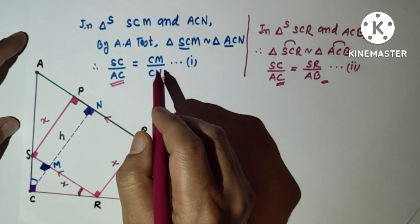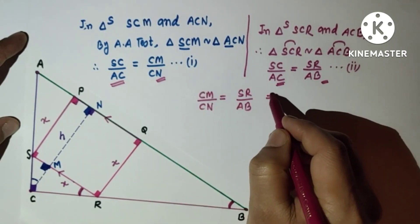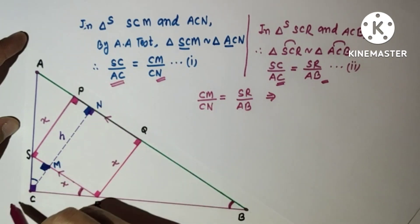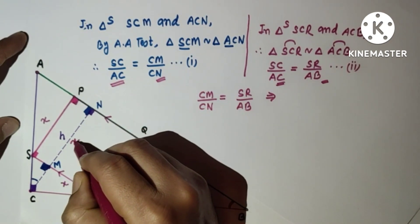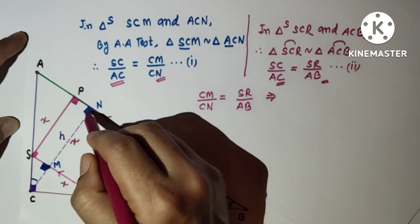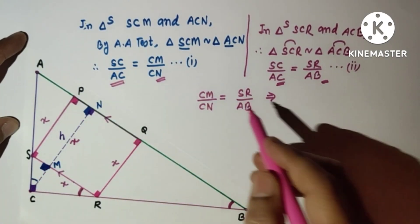CM is h minus x because the whole distance is h and this side is x. CN is h, SR is x, and AB is c.